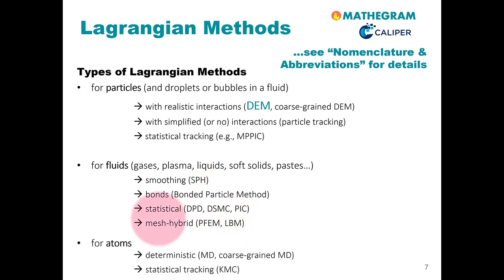At the very end, we can highlight Lagrangian methods that track individual atoms. If we track them in a deterministic way, we speak of so-called molecular dynamics or a coarse-grained molecular dynamics code. If we perform statistical tracking of atoms, then we would speak of a kinetic Monte Carlo method, for example.